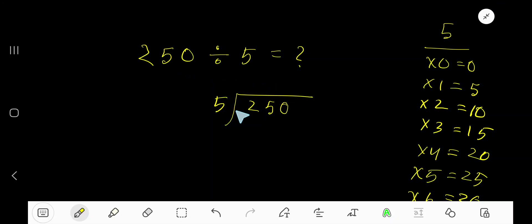250 divided by 5. Here 5 is the divisor, so we need the multiplication table of 5. 5 times 0 is 0, 5 times 1 is 5, 5 times 2 is 10, 5 times 3 is 15, 5 times 4 is 20. To find out the multiplication table of 5 easily, just add 5 with the previous step: 0 plus 5 is 5, 5 plus 5 is 10, 10 plus 5 is 15, 15 plus 5 is 20, like this.